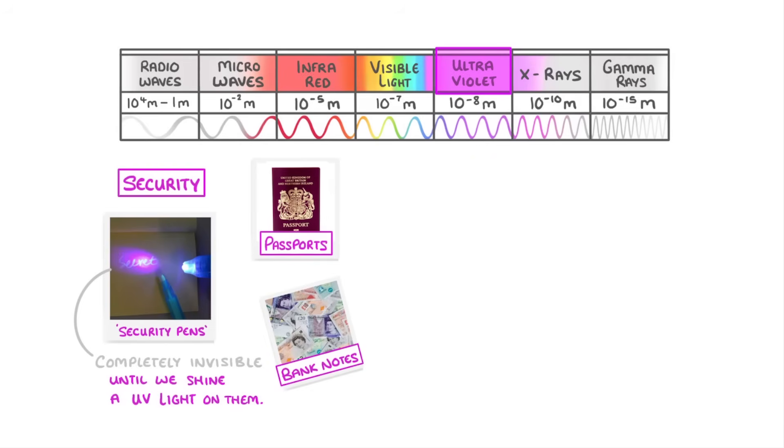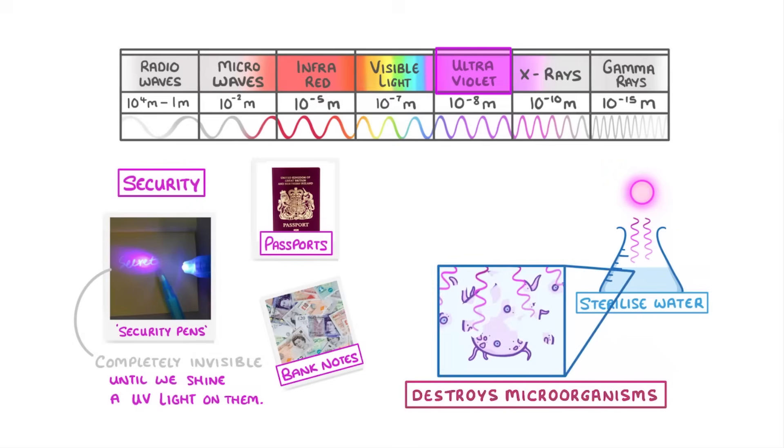And the very final use of UV radiation is to sterilize water, which it can do because it destroys microorganisms.